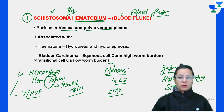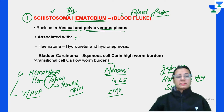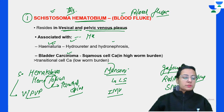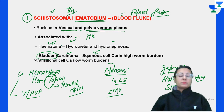Schistosoma hematobium resides in the vesicular and pelvic venous plexus associated with hematuria, obviously because it resides in those venous plexuses, as well as hydroureter and hydronephrosis. It is also the causative agent for squamous cell carcinoma causing bladder carcinoma. The three differentiating points within Schistosoma hematobium, mansoni, and japonica are important - specifically where they are residing.